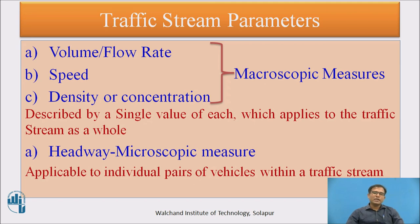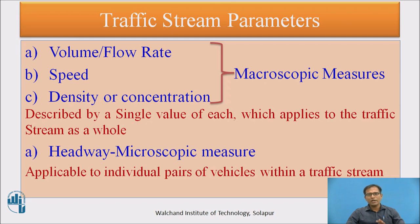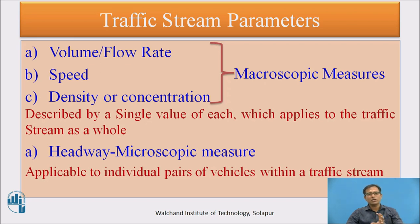With this background, traffic stream parameters are classified in two ways: macroscopic measures and microscopic measures. Macroscopic measures define volume, speed, density, or concentration — a single value for each that applies to the traffic stream as a whole. Microscopic measures, such as time headway and space headway, measure stream parameters between individual vehicles — from one vehicle to another within the traffic stream.